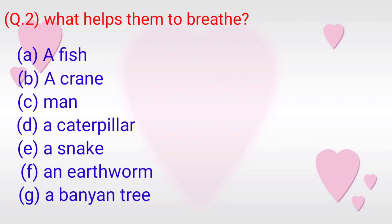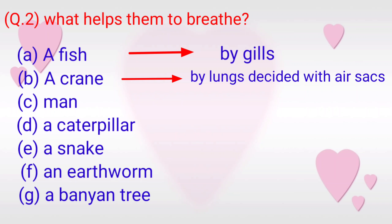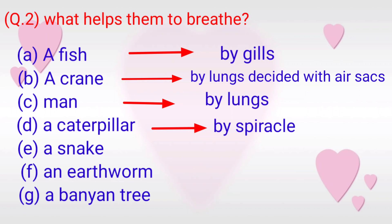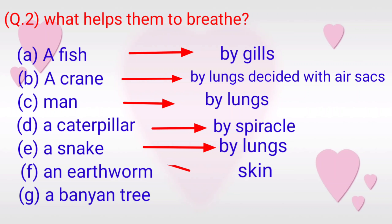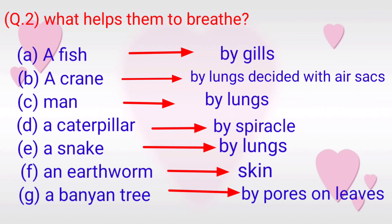G. A banyan tree — by pores on leaves. Answers: A. Fish — by gills. B. Crane — by lungs aided with air sacs. C. Man — by lungs. D. Caterpillar — by spiracles. E. Snake — by lungs. F. Earthworm — by skin. G. Banyan tree — by pores on leaves.